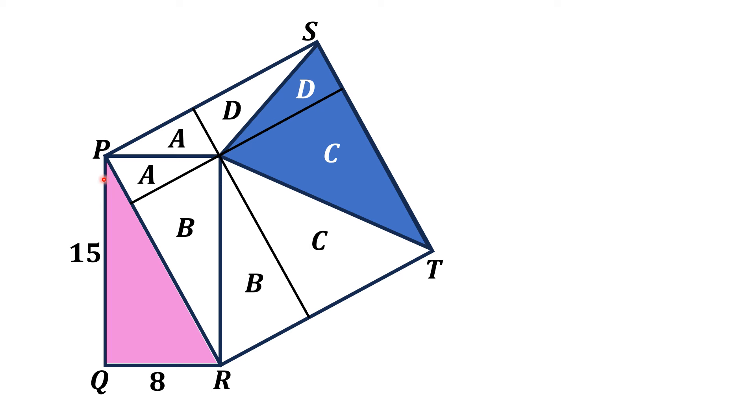From here, this is a right triangle PQR. Area of a right triangle is equal to half times base times height. The base of this triangle is 8 and height is 15, so the area of this triangle is 60 square units.